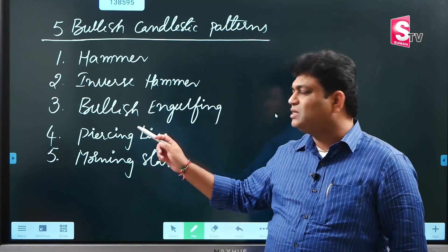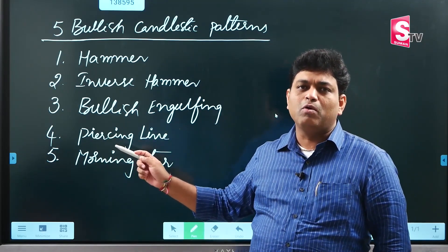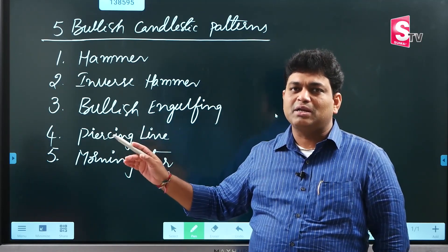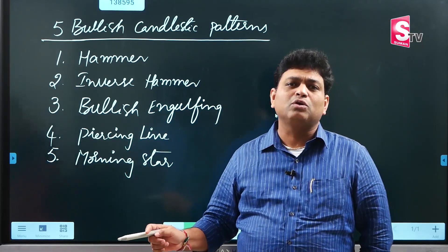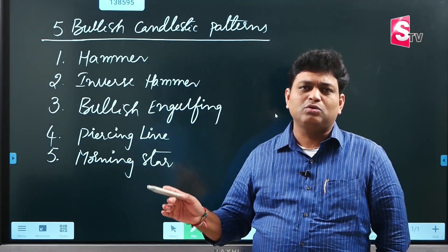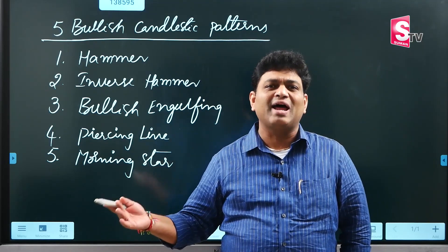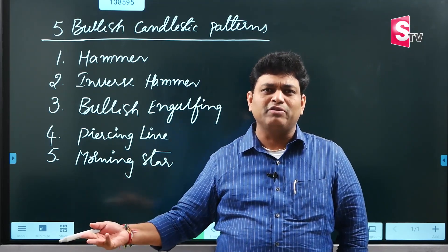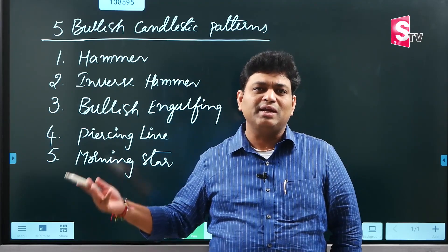Now, in this video, we have the 4th bullish candlestick pattern — the Piercing Line. Today we will discuss this pattern, and we will look at L&T to identify long and short trading and investment opportunities and decisions using this pattern.